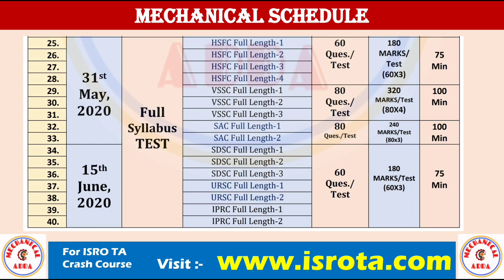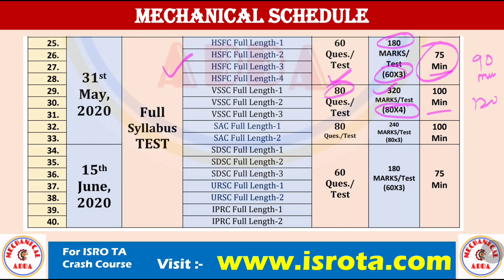For the full length test series, there will be 4 tests for HSFC — 60 questions per test, 180 marks, 75 minutes (official exam gives 90 minutes but we use 75 minutes since this is online with no bubble filling). For VSSC, there will be 80 questions per test, 320 marks (80×4), with 100 minutes. Negative marking is 1 mark for each center.